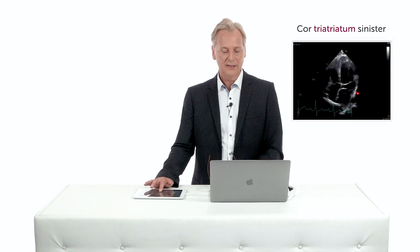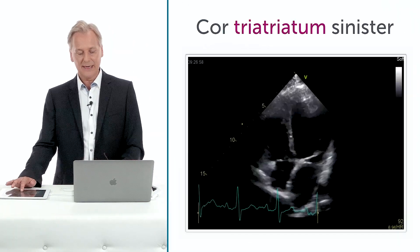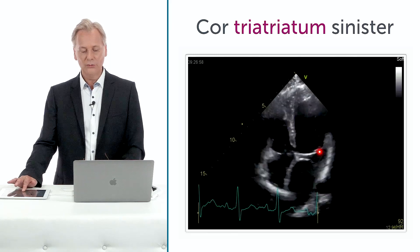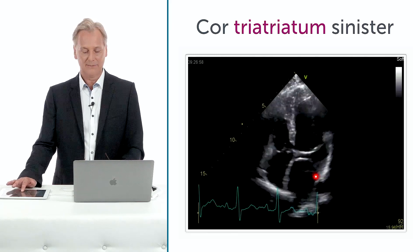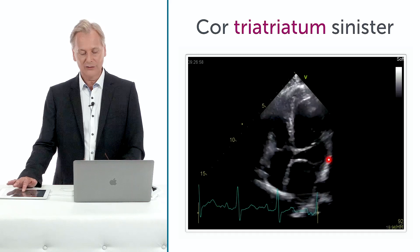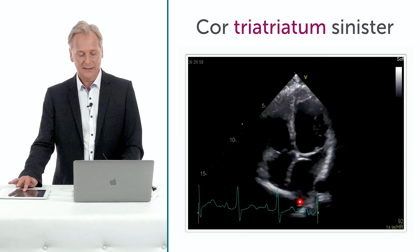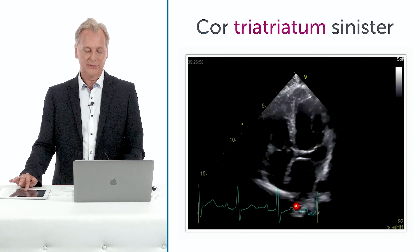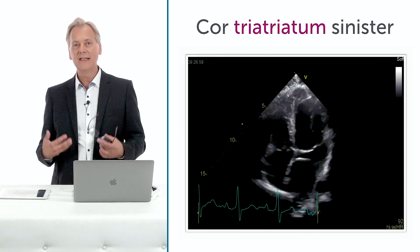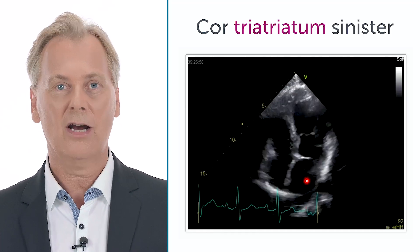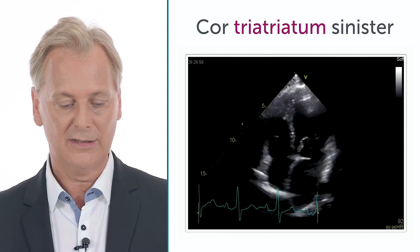Another rather rare pathology is the so-called cor triatriatum sinister. What is it? It's a defect where there is a septation in the left atrium so that you have two chambers which communicate. Depending on the size of this communication, you can have elevated pressures in the pulmonary venous flow part of the left atrium, thereby again causing pulmonary hypertension in the right ventricle.